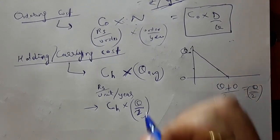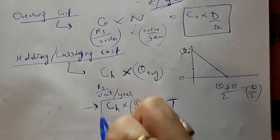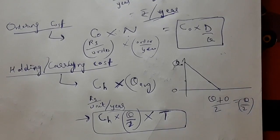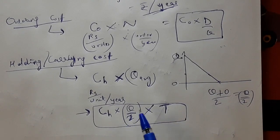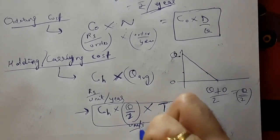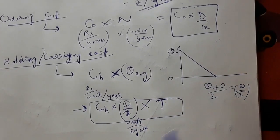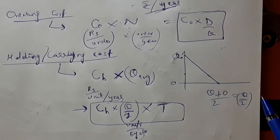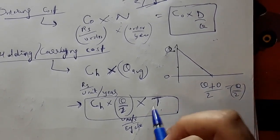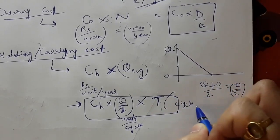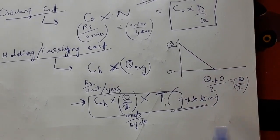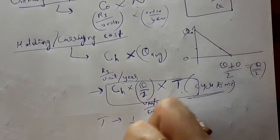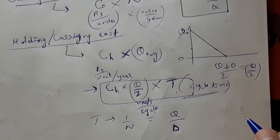There is one more term to multiply, and that is T — the cycle time. The holding/carrying cost will occur every cycle, so CH is in rupees per unit per year. Multiplying CH × Q/2 (average inventory, units per cycle) by the cycle time T, where T = Q/D (or 1/n), gives the holding cost for one cycle.